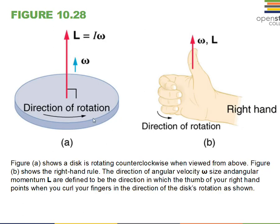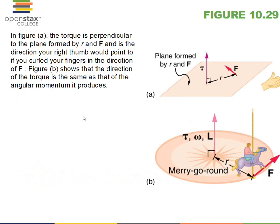Angular momentum is a vector, and its direction is a little unusual — it's not in the direction of motion. Instead, it's defined to be perpendicular to the direction of rotation. If you wrap the fingers of your right hand in the direction of rotation, then your thumb shows the direction of the angular momentum. We won't concentrate heavily on this in the course, but we will do a little demo in class with a bicycle wheel that is somewhat interesting.